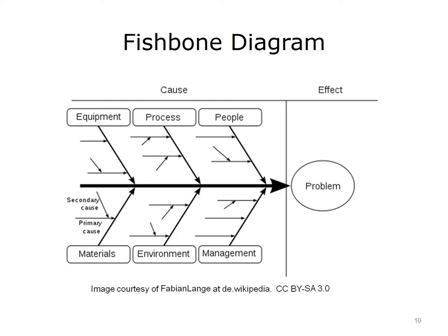The categories originally conceptualized for the fishbone diagram include equipment or machine, process or method, people or manpower, materials, everything in the process from raw materials to information used in production, the environment, and management. Each of the categories are laid out as seen in the diagram on the slide. The goal is to identify areas where quality defects or variation could occur or have occurred, allowing the team to focus on strengthening the weak link or altering design to avoid the defect. The fishbone approach came into vogue in the 1940s and has been a staple of Japanese manufacturing.